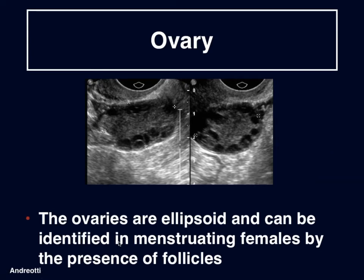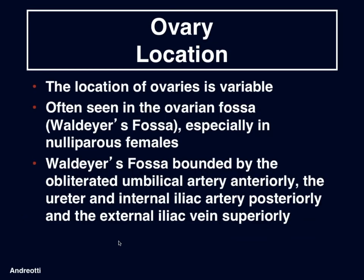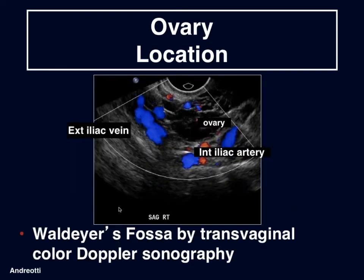Moving on to ovaries. These are ellipsoid structures and can be identified in menstruating females by the presence of follicles. The location of the ovaries is variable — often seen in the ovarian fossa, which may be called Waldeyer's fossa, especially in nulliparous patients. Waldeyer's fossa is bounded by the obliterated umbilical artery anteriorly, the ureter and internal iliac artery posteriorly, and the external iliac vein superiorly. Here we have a nice sonographic depiction of Waldeyer's fossa, with the ovary bounded posteriorly by the internal iliac artery and superiorly by the external iliac vein.